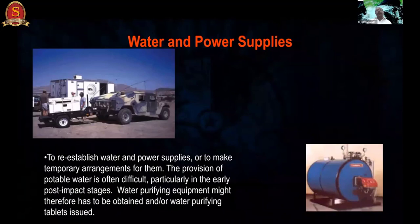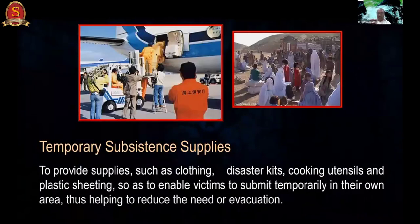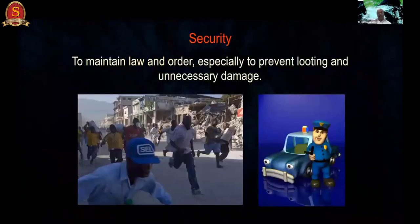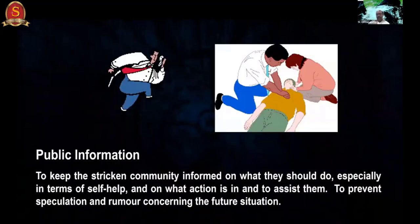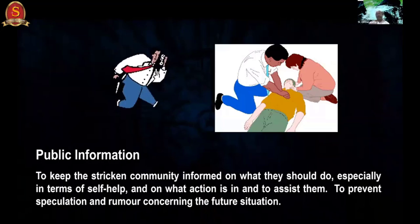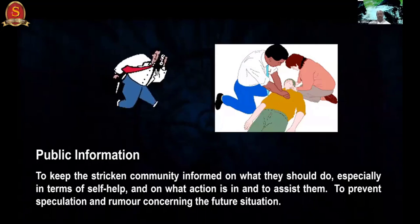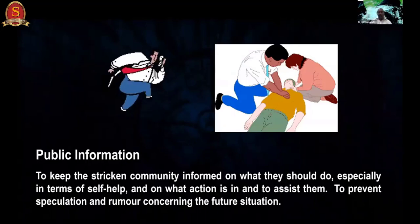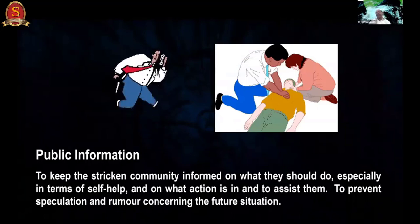Temporary security is essential to maintain law and order and prevent looting. Public information is critical - without proper information, there is chaos. New technologies like sentiment analysis using artificial intelligence can give public alerts. Alexa-type systems are being created so people can ask about missing persons and receive automatic answers.